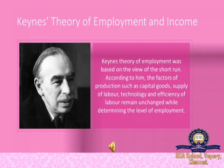His name is J.M. Keynes — John Maynard Keynes. He wrote his book, 'The General Theory of Employment, Interest and Money.' This book was published in the year 1936. This book is the turning point in the development of modern economic theory.